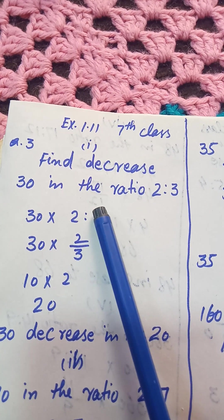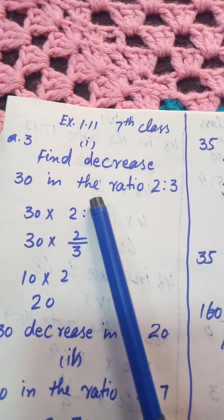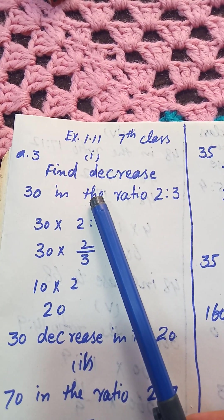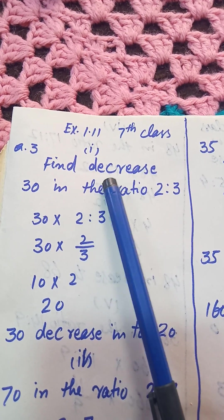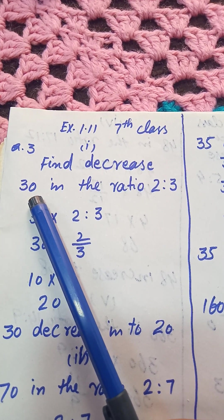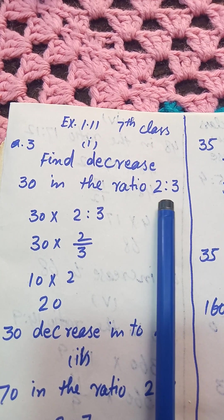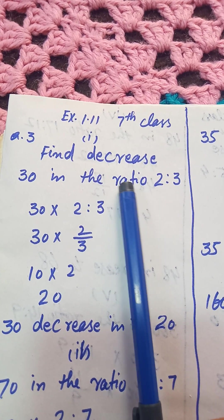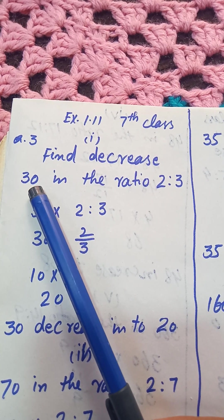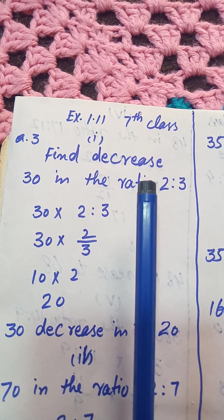Hello viewers and dear students, my name is Abdul Rahman and you see YouTube channel MathCreative782. Our topic is decreasing a fixed given number in a fixed given ratio. We will discuss decreasing 30 in the ratio 2:3.